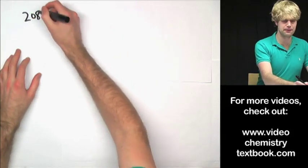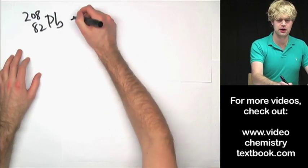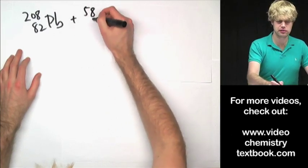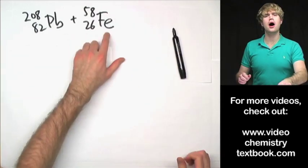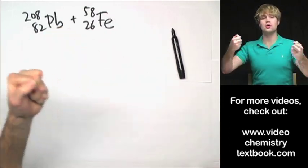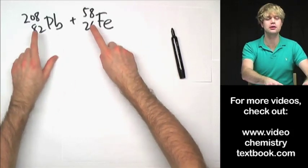You can take, for example, Pb, which is lead, and you can add Fe, which is iron to it. You've got to get these things going super fast to slam into each other because they both have a lot of protons in the nucleus.